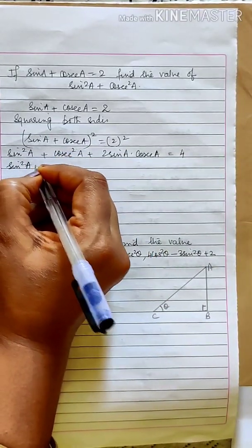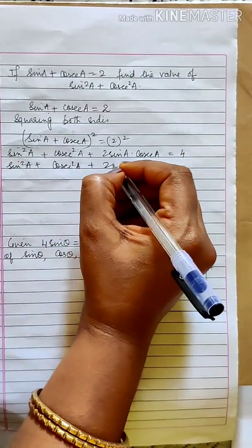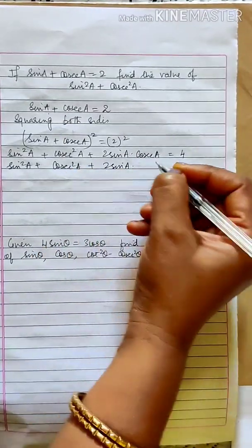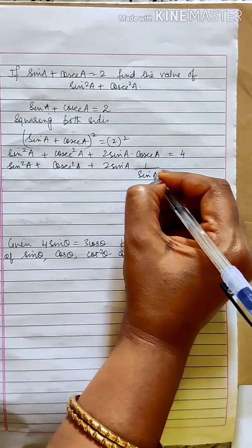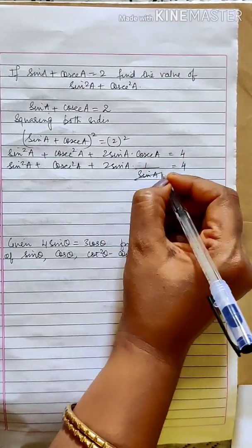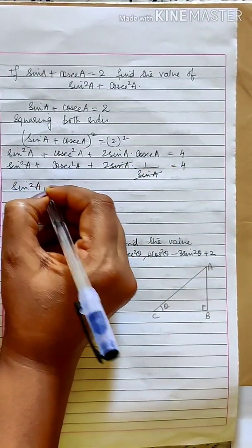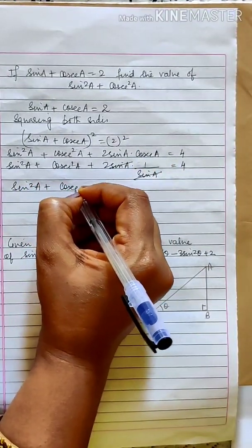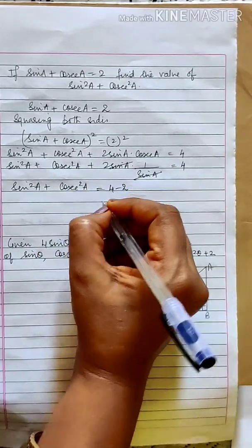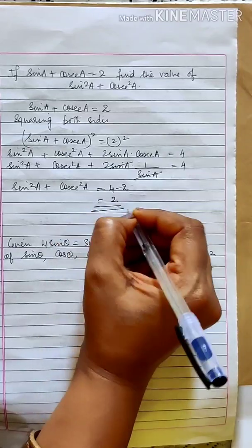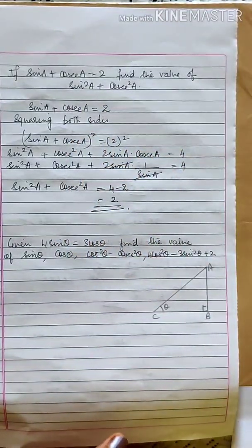So sin square A plus cosecant square A plus 2 sin A times cosecant A — cosecant A is the reciprocal of sin A, so sin A and sin A cancel. You are left with sin square A plus cosecant square A equals 4 minus 2, which is equal to 2.